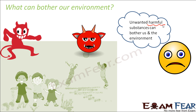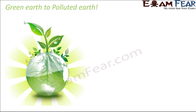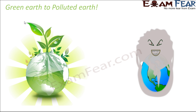When these unwanted harmful substances are present in the environment, we say that the environment is polluted — and that is where pollution comes into picture. So whenever you have such harmful substances present in our environment, our environment gets polluted. Due to the presence of these undesirable substances, the green earth is gradually getting converted to polluted earth.